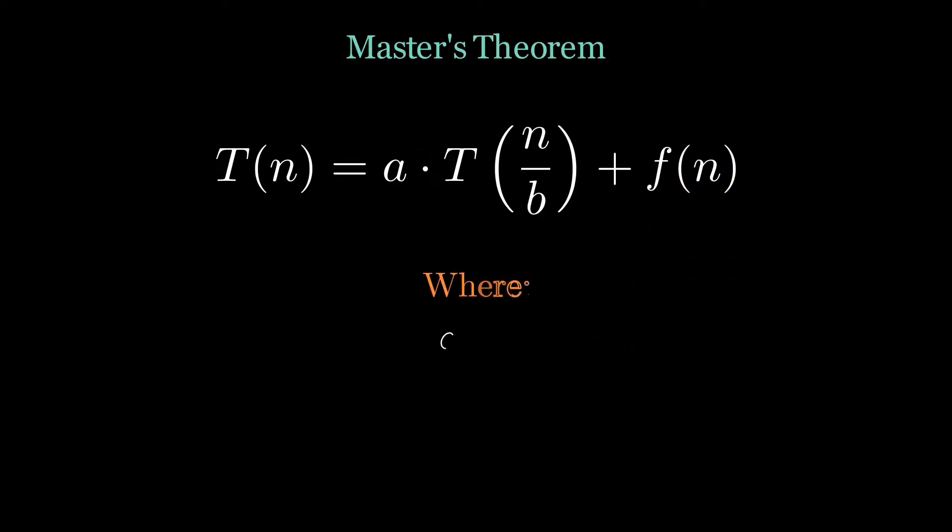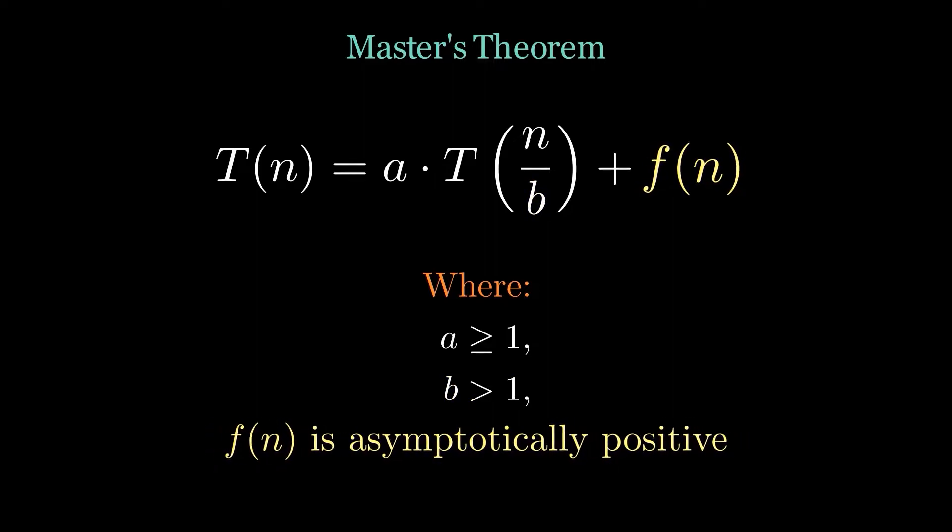In order for Master's theorem to be applicable, there are some constraints on the values a, b, and the function. a should be greater than or equal to 1, b should be greater than 1, and the function should be asymptotically positive.